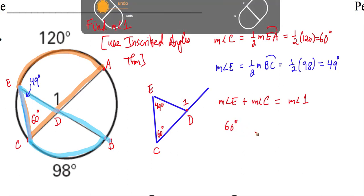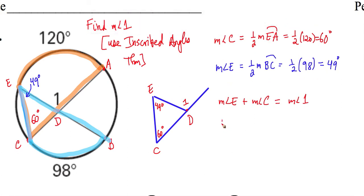Excuse me. The measure of angle E is 49 degrees. And then the measure of angle C is 60 degrees. And those two added up must be equal to the measure of angle 1. So this is 109 degrees. And that's equal to the measure of angle 1. So there we have it, our final answer.